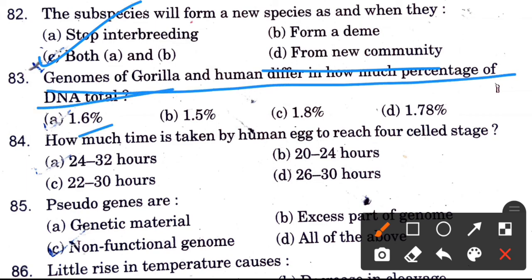Human genomes differ in how much percentage of DNA? The answer is 1.6%. How much time is taken by human egg to reach 4-cell stage? The answer is 24 to 32 hours.